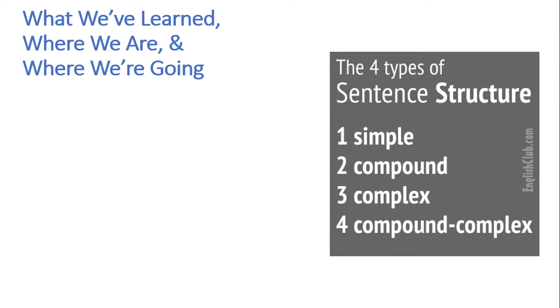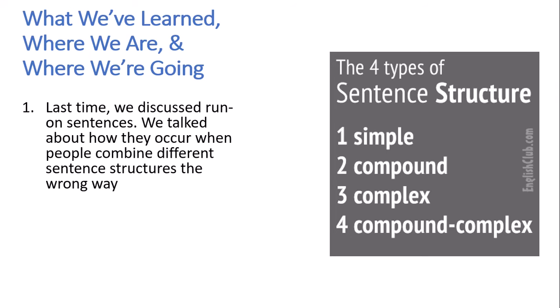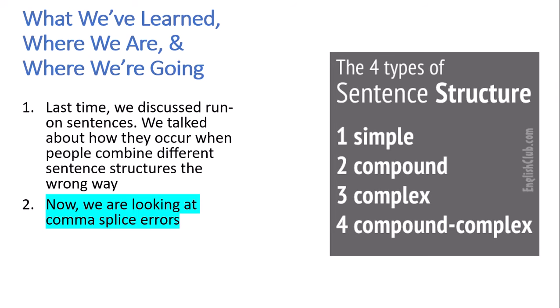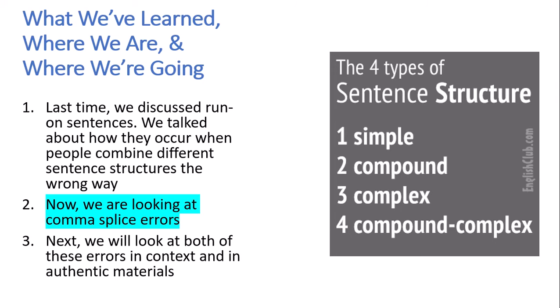So what we've learned, where we are, and where we're going. Those are the four types of sentence structures: simple, compound, complex, and compound complex. Last time we discussed run-on sentences and talked about how they occur when people combine different sentence structures the wrong way. Now we're going to look at comma splice errors and we'll talk about how they're related to run-ons. And then next, we'll look at both of these errors in context — pairs of sentences or short paragraphs — and also look at authentic materials to see what these actually look like in real life: how would I find them, how would I fix them.